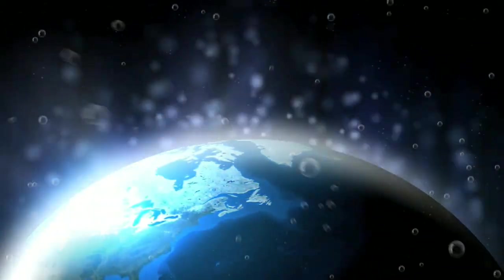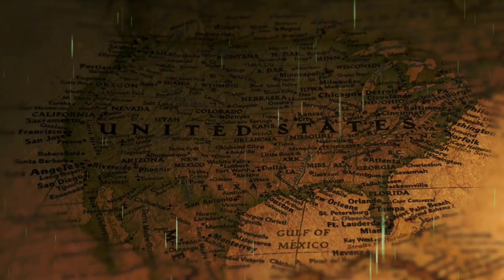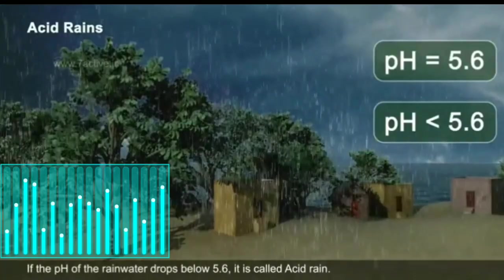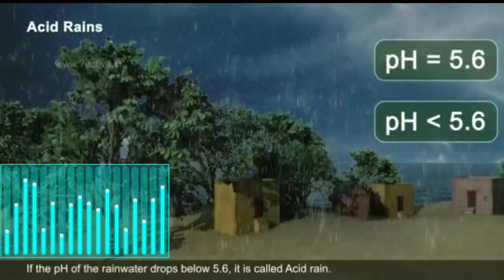Acid rain is a serious environmental problem occurring all over the world, particularly in large swathes of the United States and Canada. As the name suggests, it indicates precipitation that is more acidic than normal.